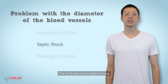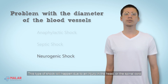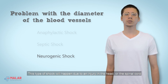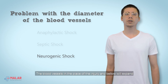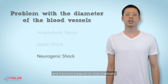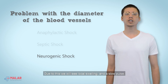The third type is neurogenic shock, which occurs due to an injury in the head or the spinal cord that causes a disturbance in the nerves of the blood vessels. The blood vessels at the place of injury or below will expand and the blood pressure will drop drastically. Due to this we will see local swelling and a slow pulse.